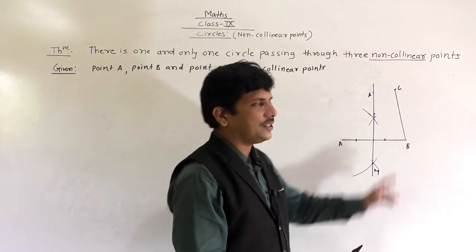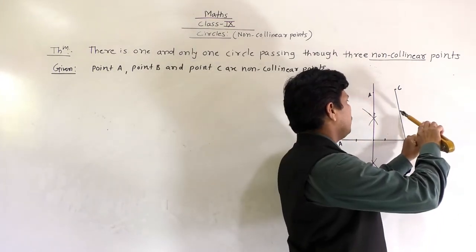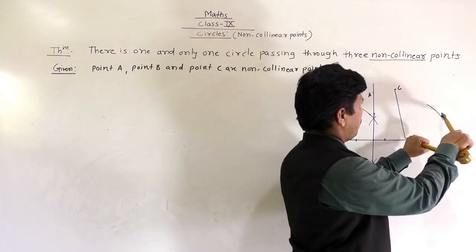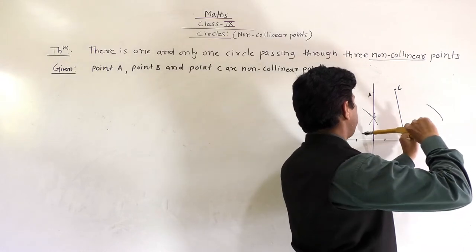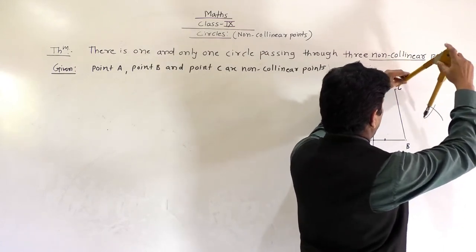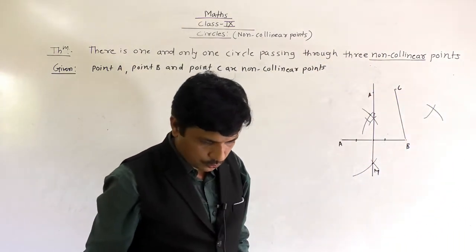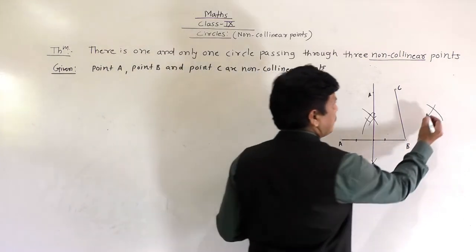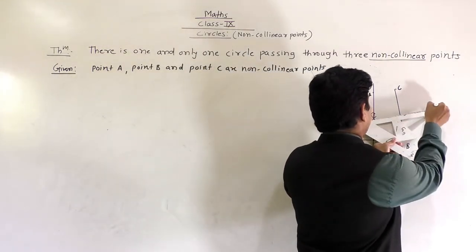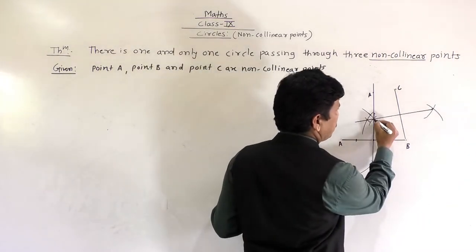In the same way, we construct the perpendicular bisector of BC, using more than half the distance. You can change the distance or keep it the same — it should be more than half. Join the intersection points to get the perpendicular bisector of BC.